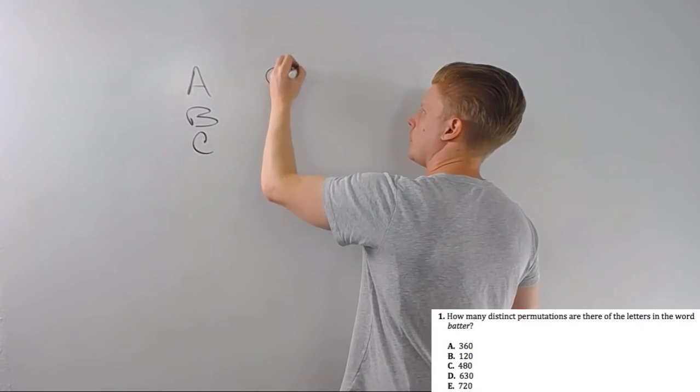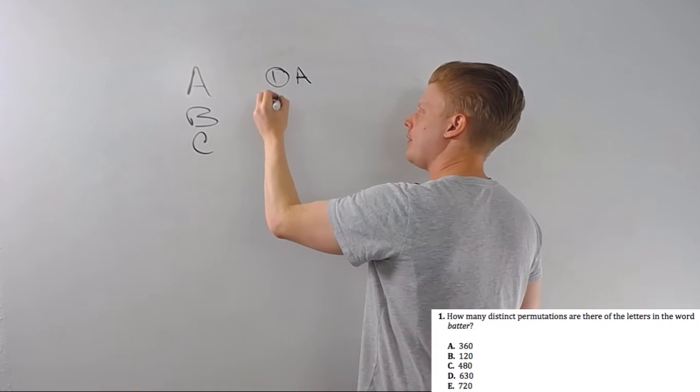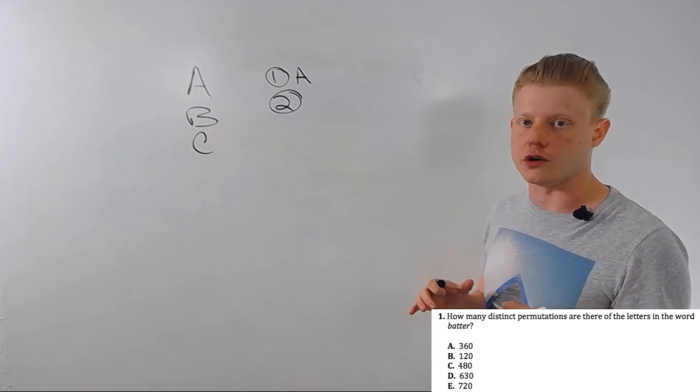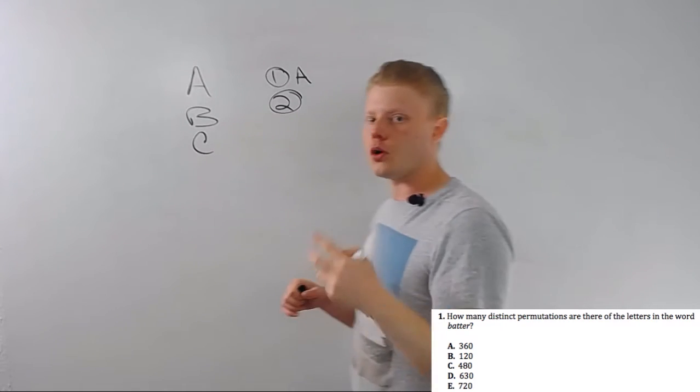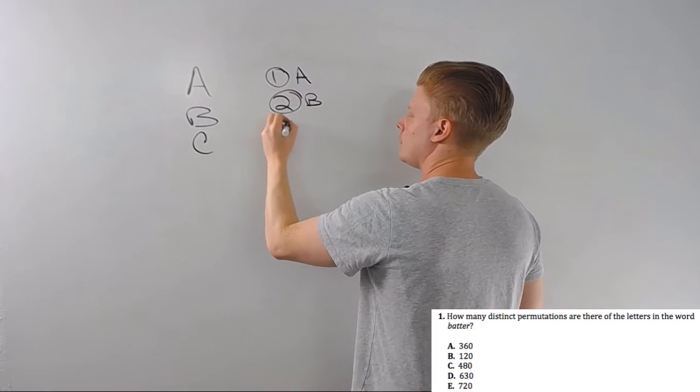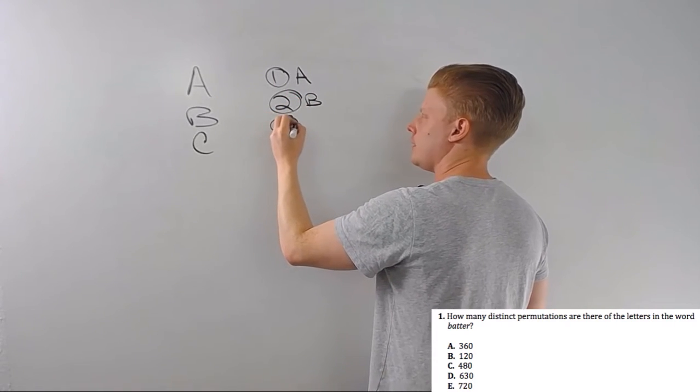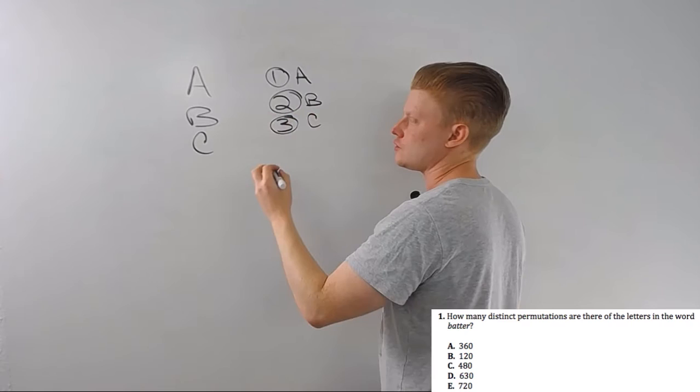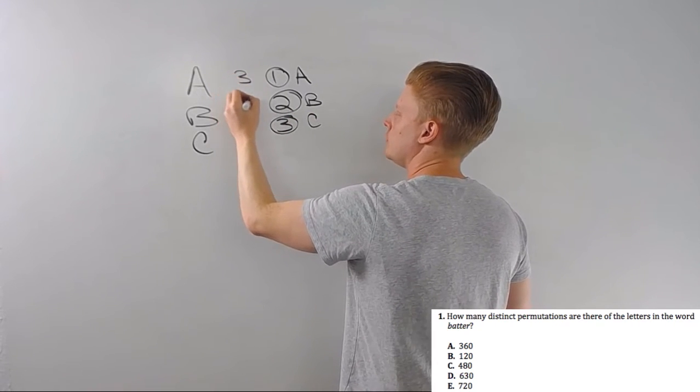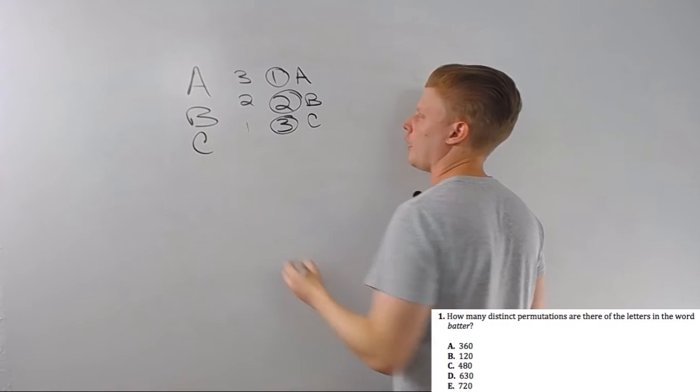So let's say A wins. Now that A's won, A can't finish second and he or she can't finish third. So there's only two possibilities for who can finish second. Let's say it's B. Now, once B has finished, C has to finish third. So we went from three possible finishers to two possible finishers to one possible finisher.